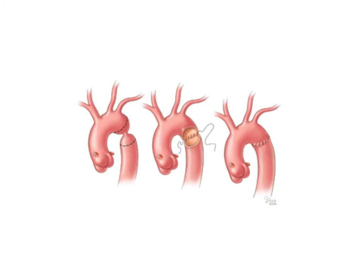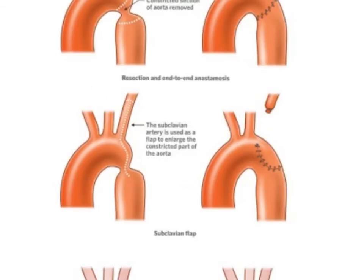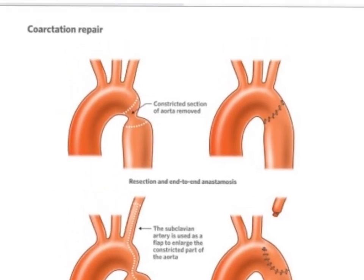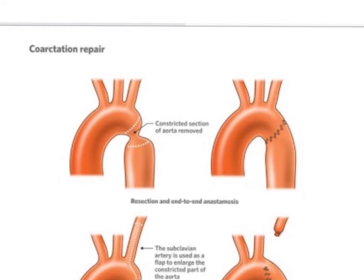This is showing a repair of the arch — probably the most common form of repair, where they basically cut off the coarctation and sew the two ends together. It's an end-to-end anastomosis repair, and it's probably the most common one that's done. That works if you have enough tissue. If the coarctation is a long coarctation, then they have to do something else.